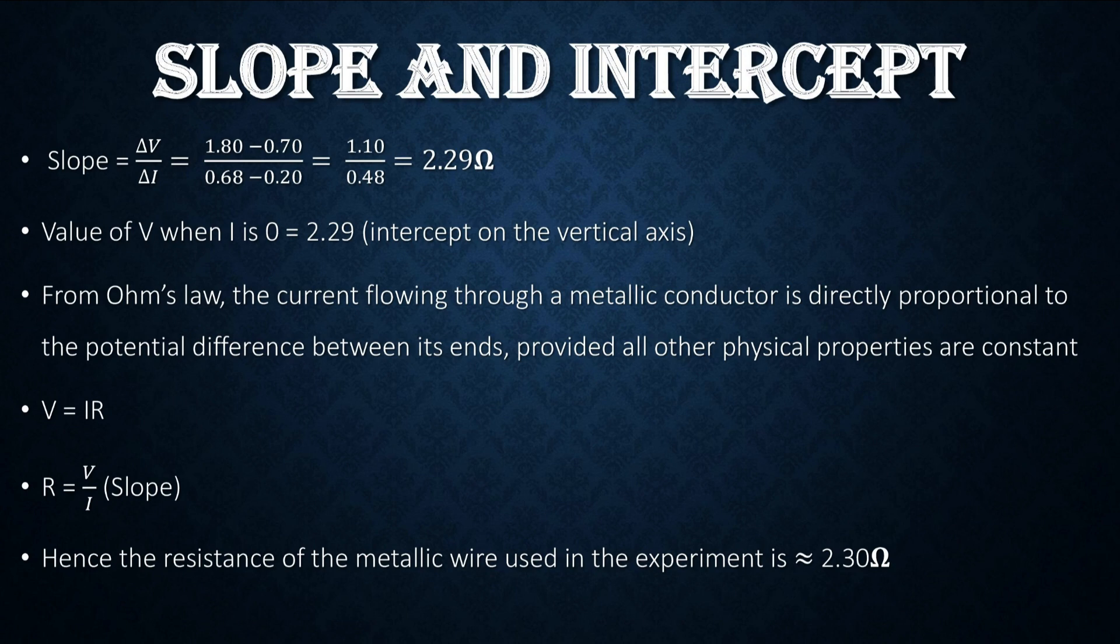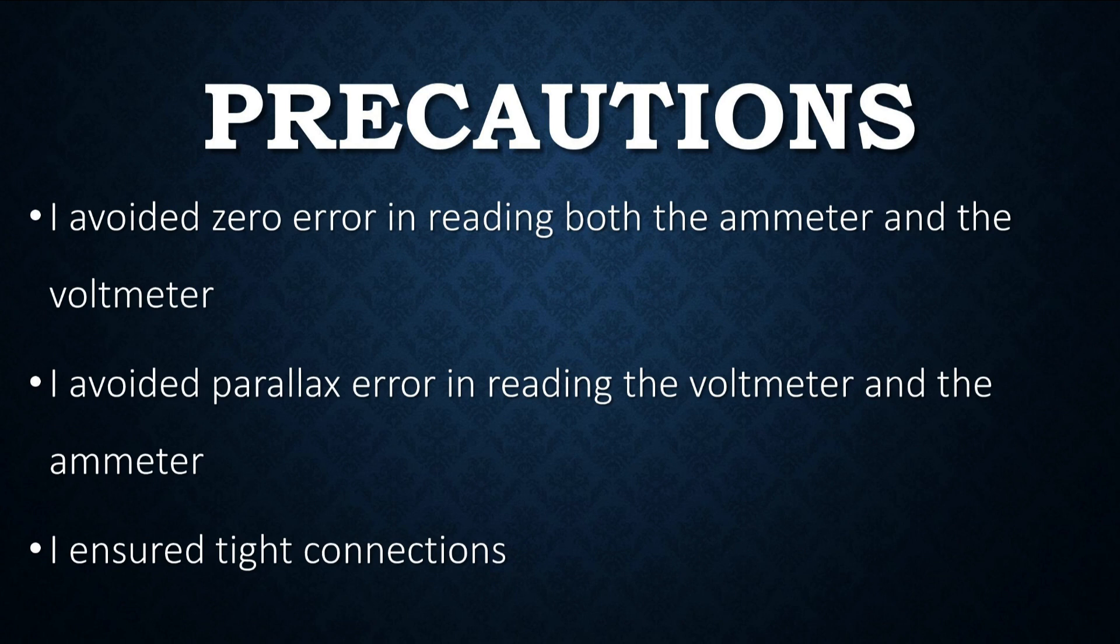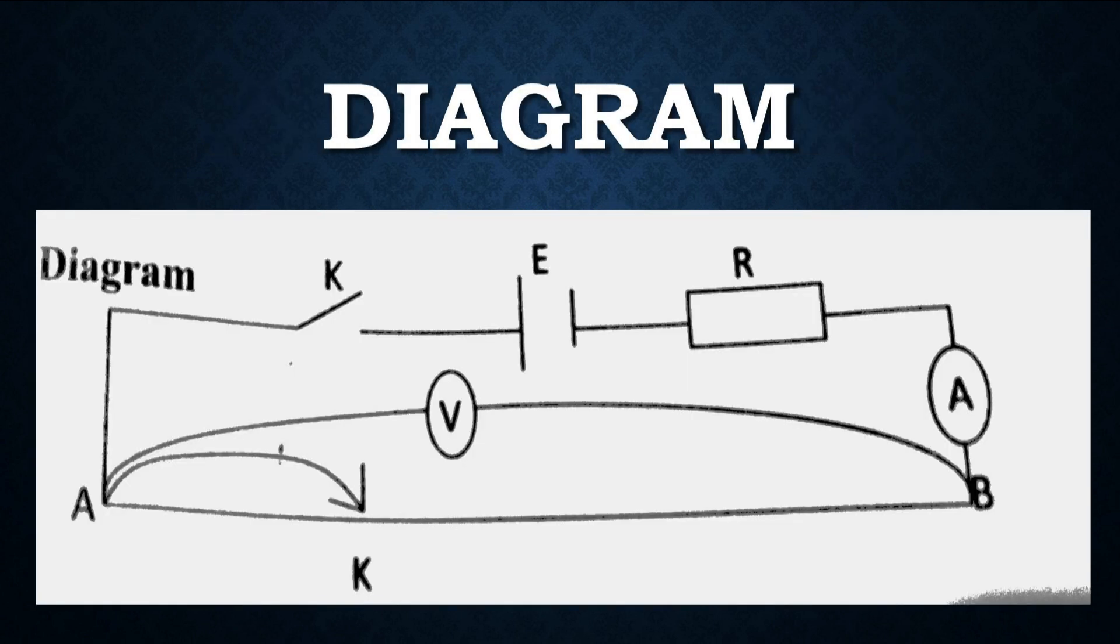Some of the precautions we took while conducting this experiment: we stated earlier on to avoid zero error on both the ammeter and the voltmeter, we also ensured tight connection during the experiments, and we avoided parallax error in reading both the ammeter and the voltmeter. We believe that this experiment has been straightforward and of help to you. We'd like that you stay tuned, please subscribe to our channel to get more of our feeds, and remain blessed.